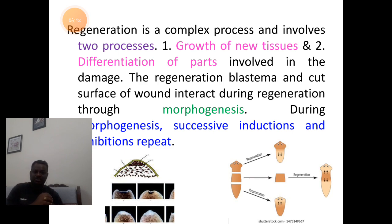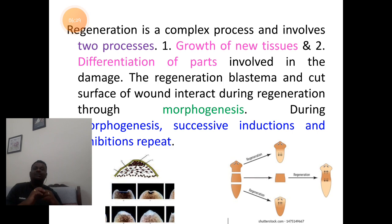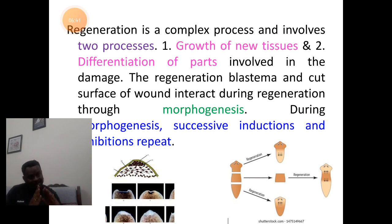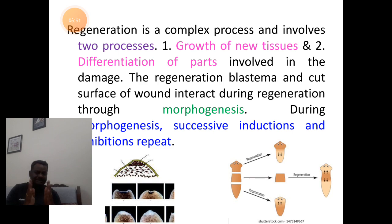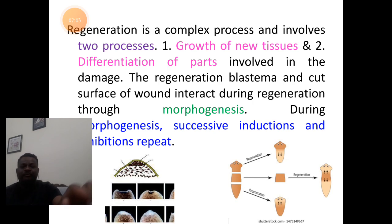Induction will trigger the process of regeneration. Inhibition occurs repeatedly and successively with induction so there will not be duplication of the regenerated part. The duplication of the regenerated part will be stopped by the inhibition process, and triggering of the formation of the lost part will be done by the induction process. Both induction and inhibition successively and parallelly repeat during the process of morphogenesis.